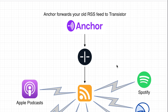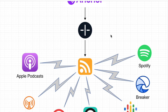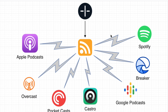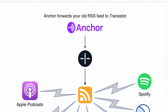So this is how it all works. Anchor is going to forward your old RSS feed to Transistor, and now Transistor is going to generate a new RSS feed that then distributes your show to Apple Podcasts, Overcast, Pocket Casts, Castro, Google Podcasts, Breaker, and Spotify. And this should all happen automatically as soon as Anchor forwards your old RSS feed.